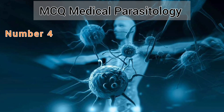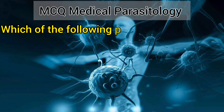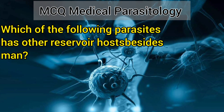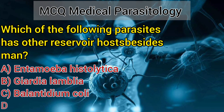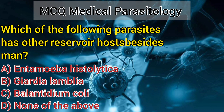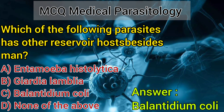Number 4. Which of the following parasites has other reservoir hosts besides man? A. Entamoeba histolytica. B. Giardia lamblia. C. Balantidium coli. D. None of the above. Answer: Balantidium coli.